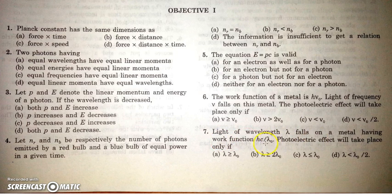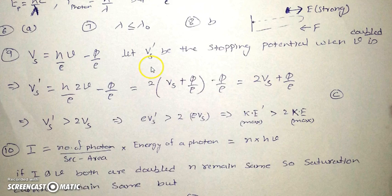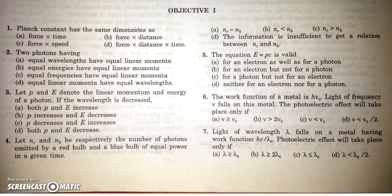The next question: light of wavelength λ falls on a metal having work function hc/λ₀. For photoelectric effect, hc/λ must be greater than hc/λ₀, so λ must be less than λ₀. Only then will the photon energy exceed the work function.